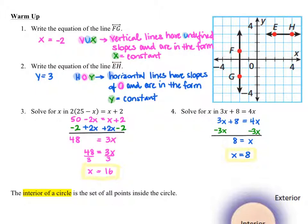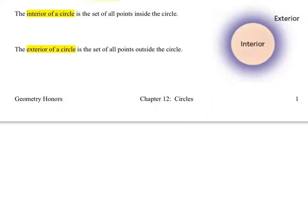Alright, let's start talking about circles. The interior of a circle is the set of all points inside the circle, and the exterior of a circle is the set of all points outside the circle. There's nothing mysterious in these definitions, but we want to make a distinction early on so that we can start talking about what's going on inside and outside the circles.